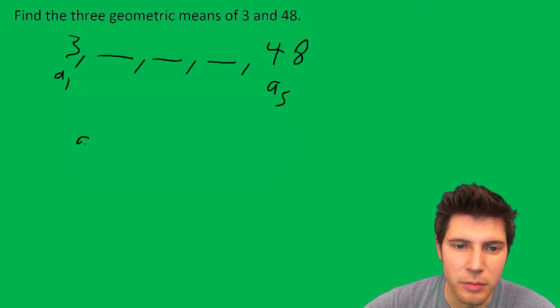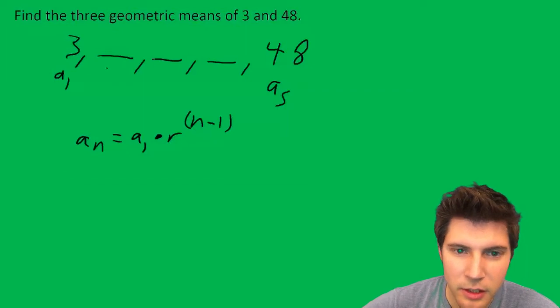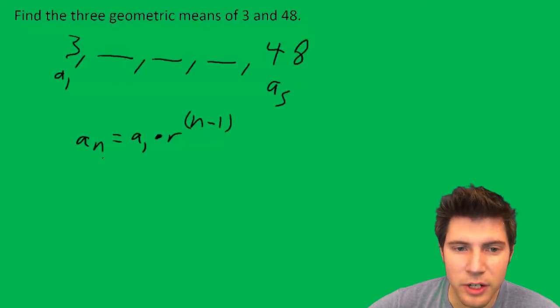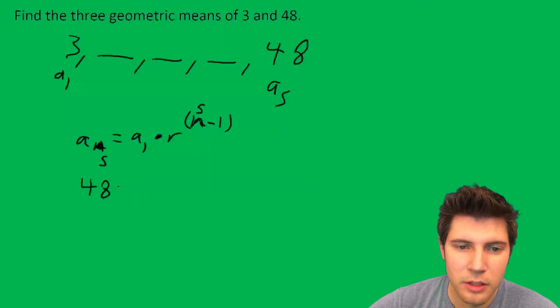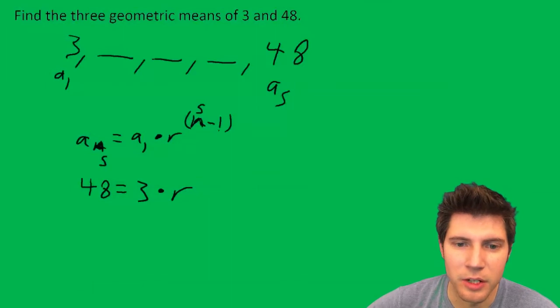We can use the formula for geometric sequence: a sub n equals a sub 1 times R to the n minus 1 exponent. I'm going to plug in 5 for n, so our a sub 5 is 48 equals our a sub 1 is 3 times R to the power of 5 minus 1, which is 4.